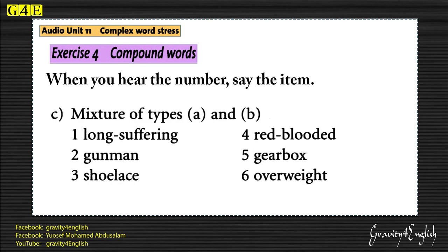Mixture of types A and B: 1. Long-suffering. 2. Gunman. 3. Shoelace. 4. Red-blooded. 5. Gearbox. 6. Overweight.